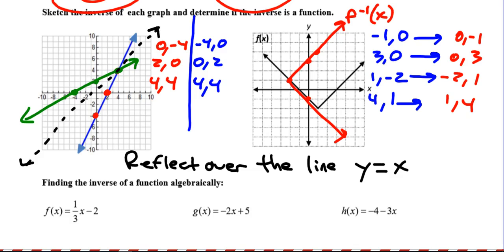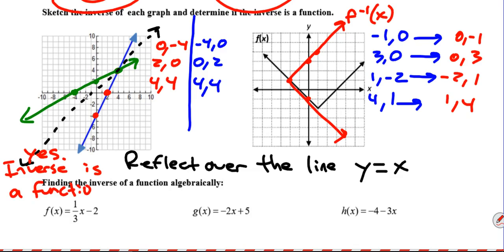One thing I didn't do on the first one — our linear function — was determine if the inverse is a function. On the graph, we do that by seeing if it passes a vertical line test. A vertical line test: can I draw a line through the function and not touch it more than once? This green function here on the left — that's a line, that's a function. We know it's not going to intersect more than once. So yes, the inverse is a function. How about when we found the inverse of our absolute value? That's passing it just about everywhere. So in this case, the inverse is not a function.